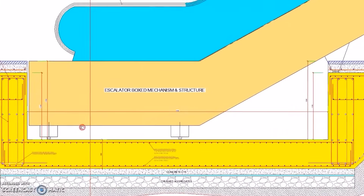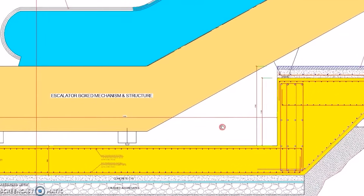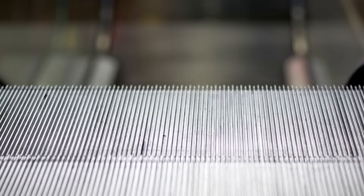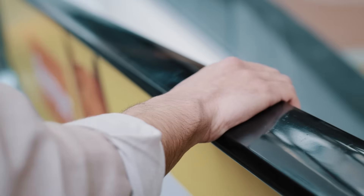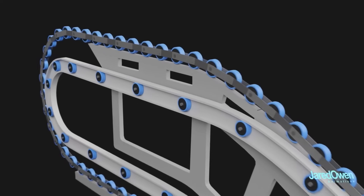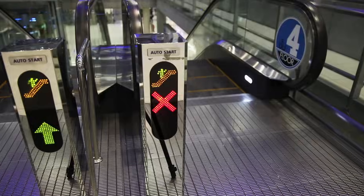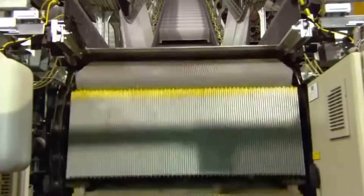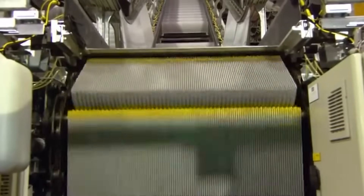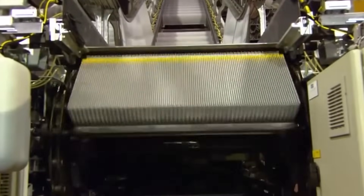The design includes specifications for the escalator truss, steps, handrails, drive systems, and safety features. There isn't a lot of room for error in the production process, so it's essential that all the kinks and quirks are worked out in this phase.